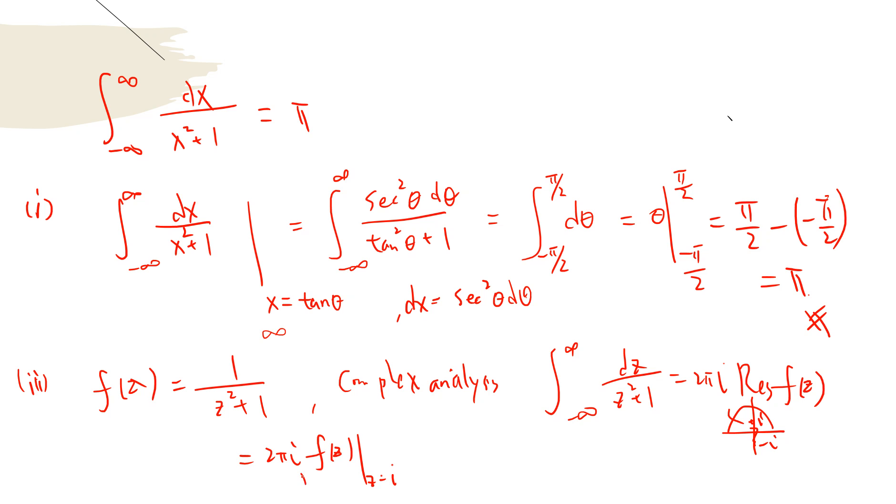So we compute the residue. It's 2πi times 1 over i minus negative i, which is 1 over 2i, so it's π. The 2i cancels, giving us π.